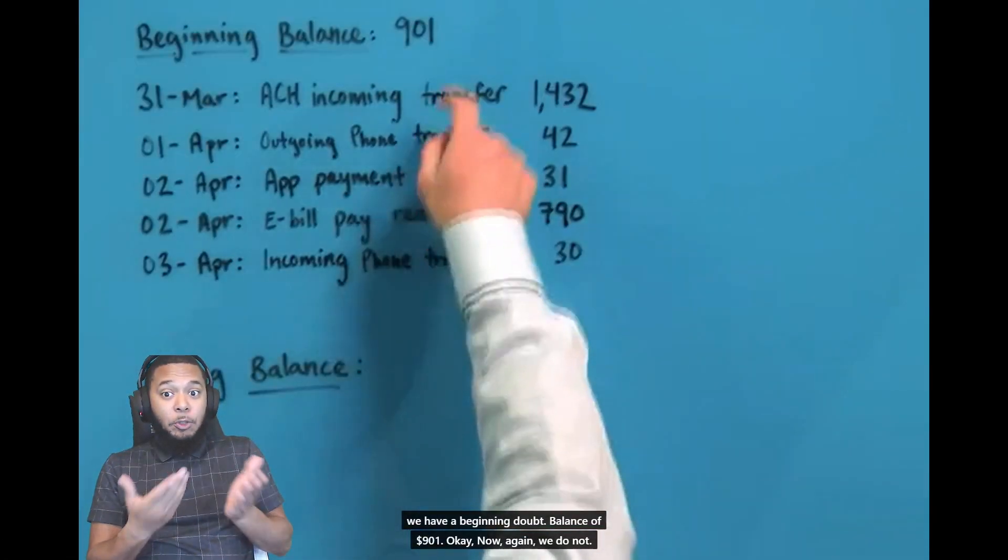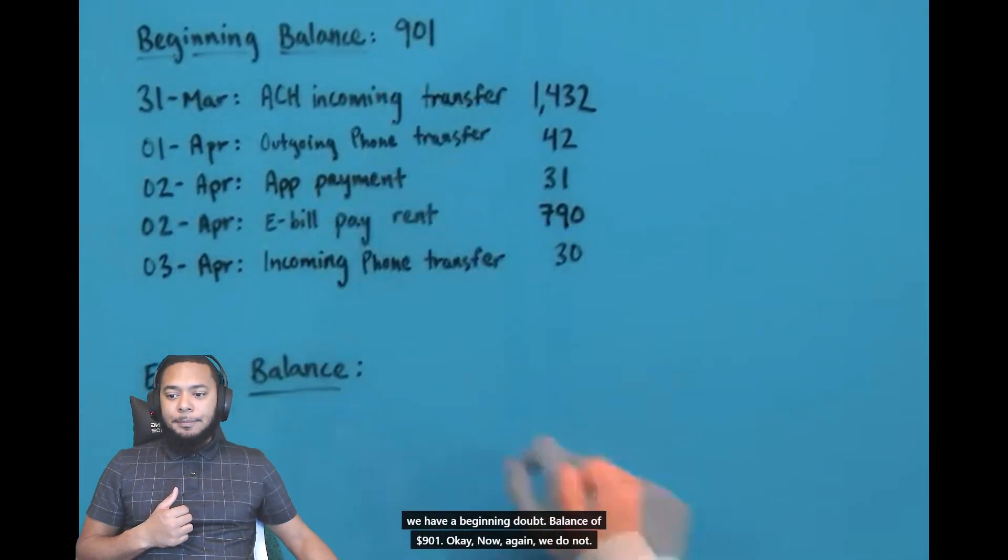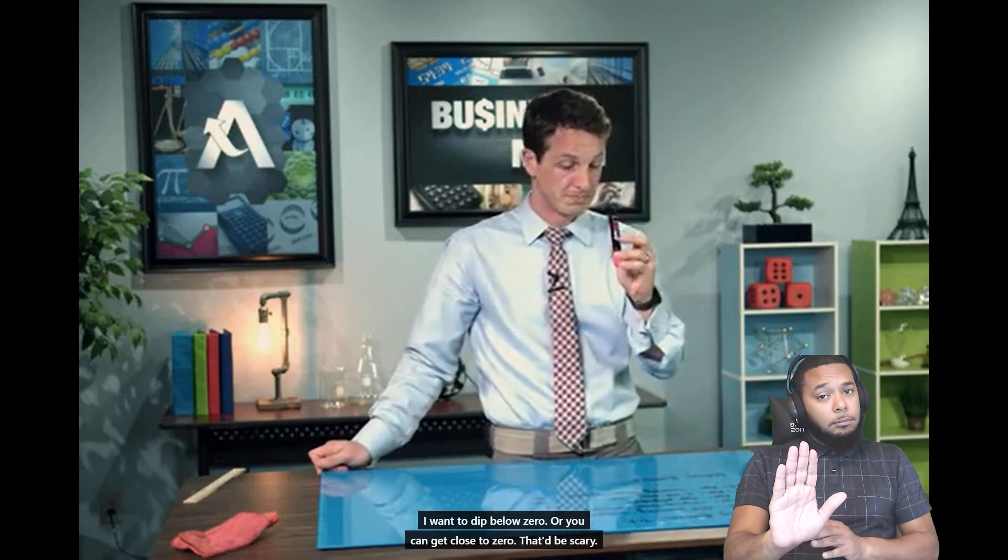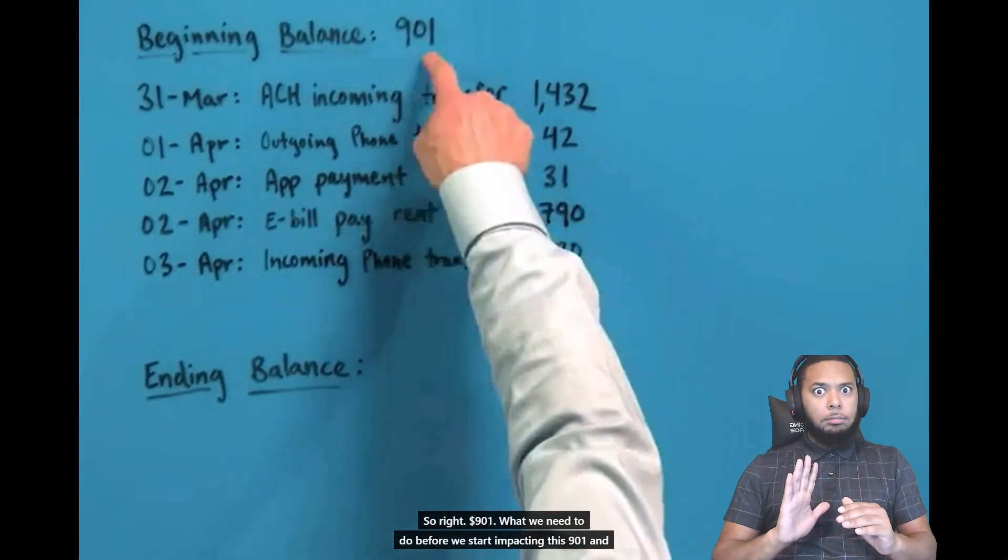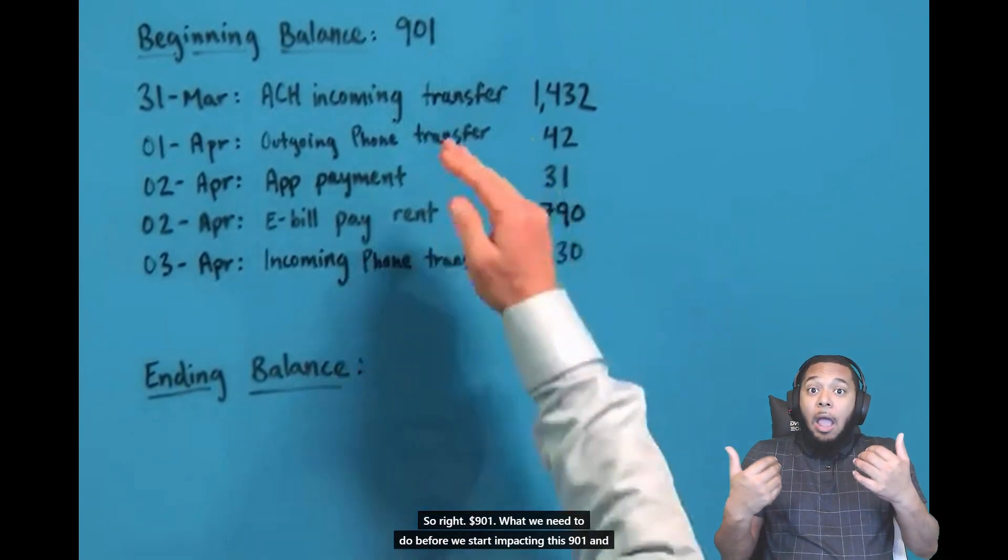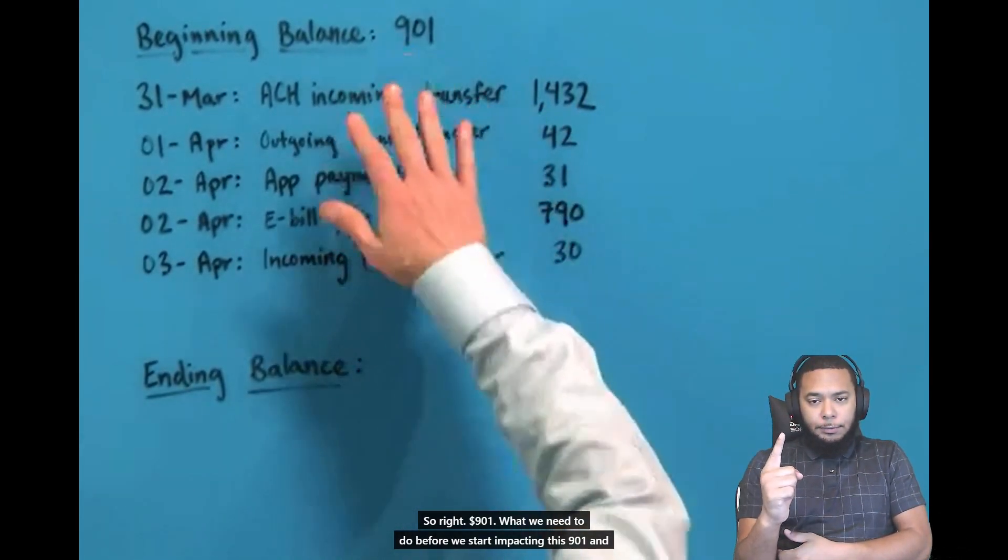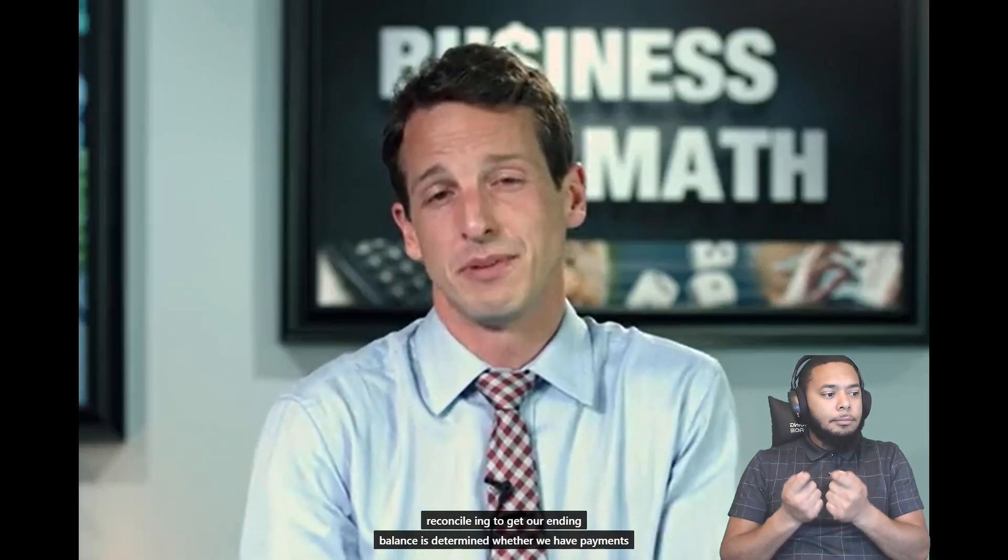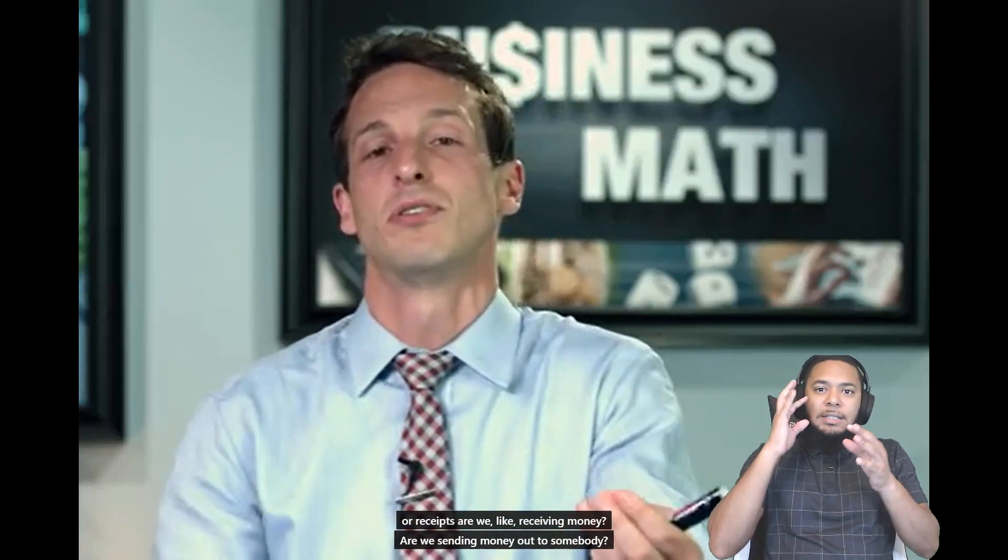All right. Reconciling the bank statement. Let's take a look at this bank statement down here. We have a beginning balance of $901. Now, again, we do not want to dip below zero. Or even get close to zero. That'd be scary. So we're at $901. What we need to do before we start impacting this $901 and reconciling to get our ending balance is determine whether we have payments or receipts.